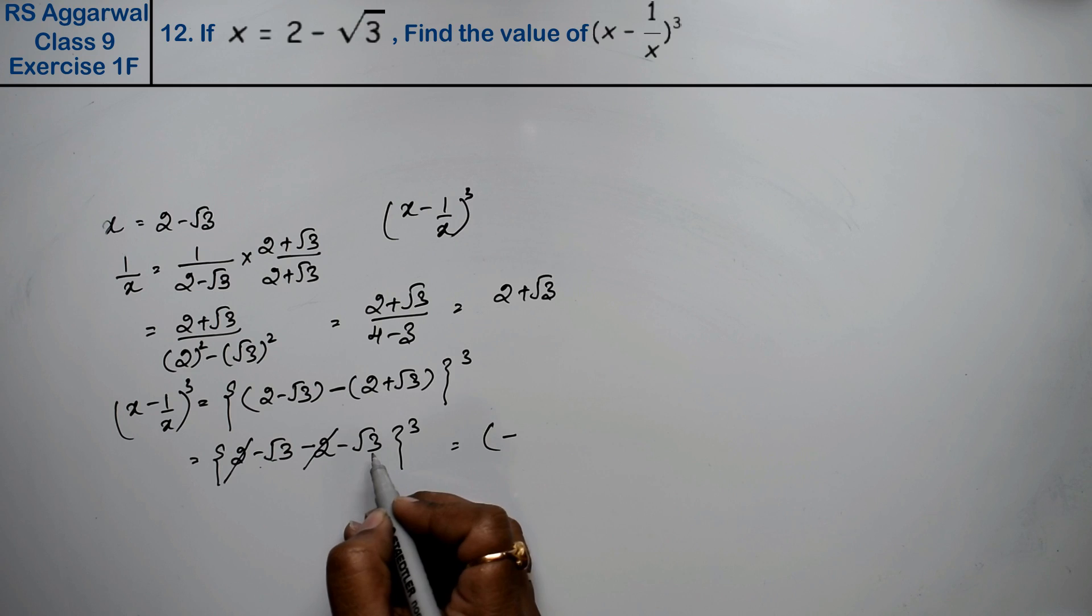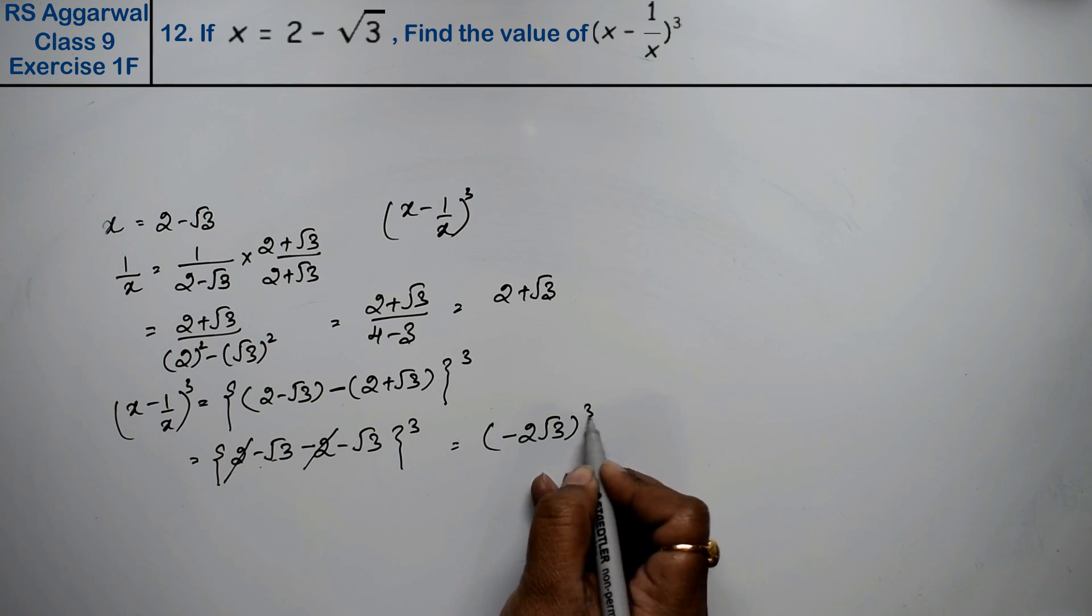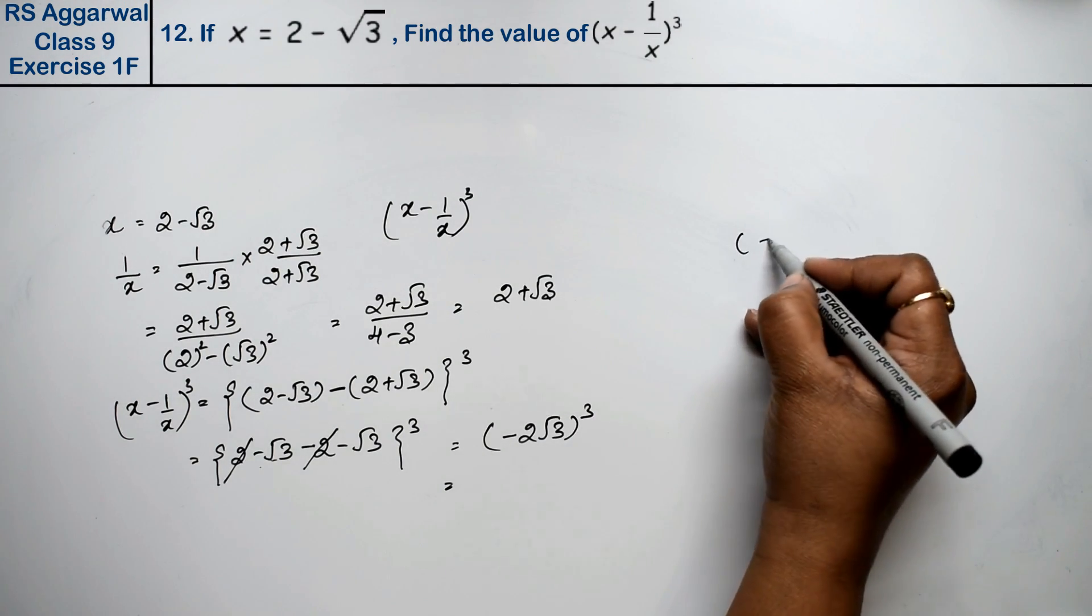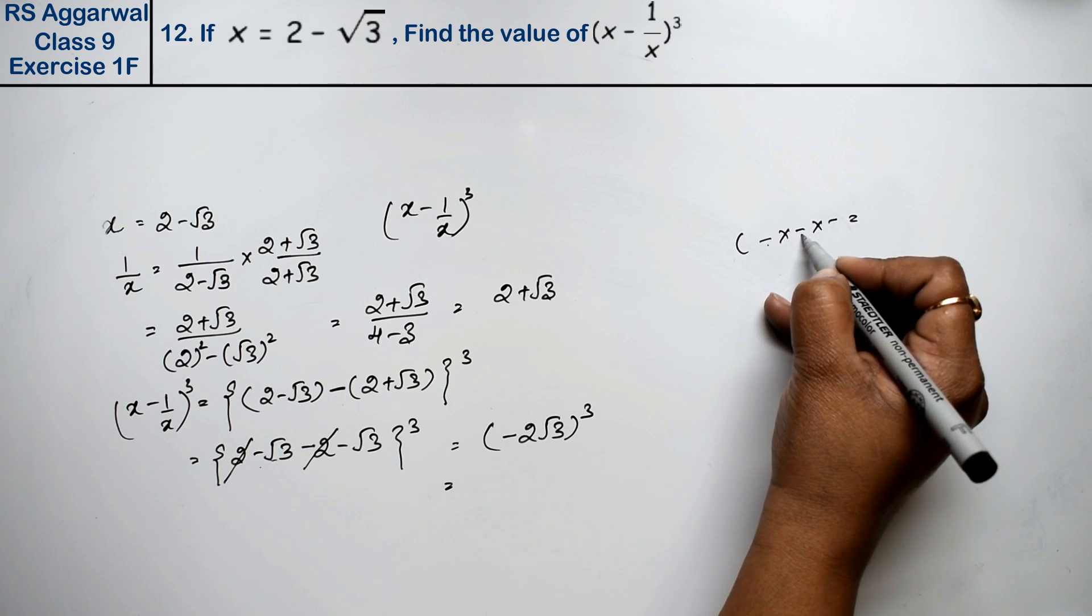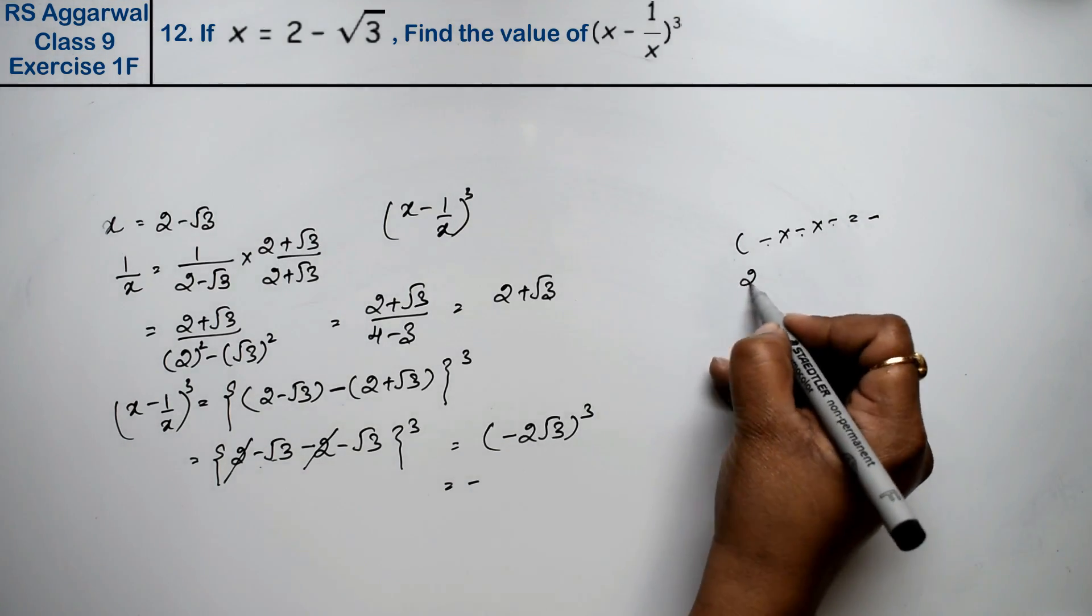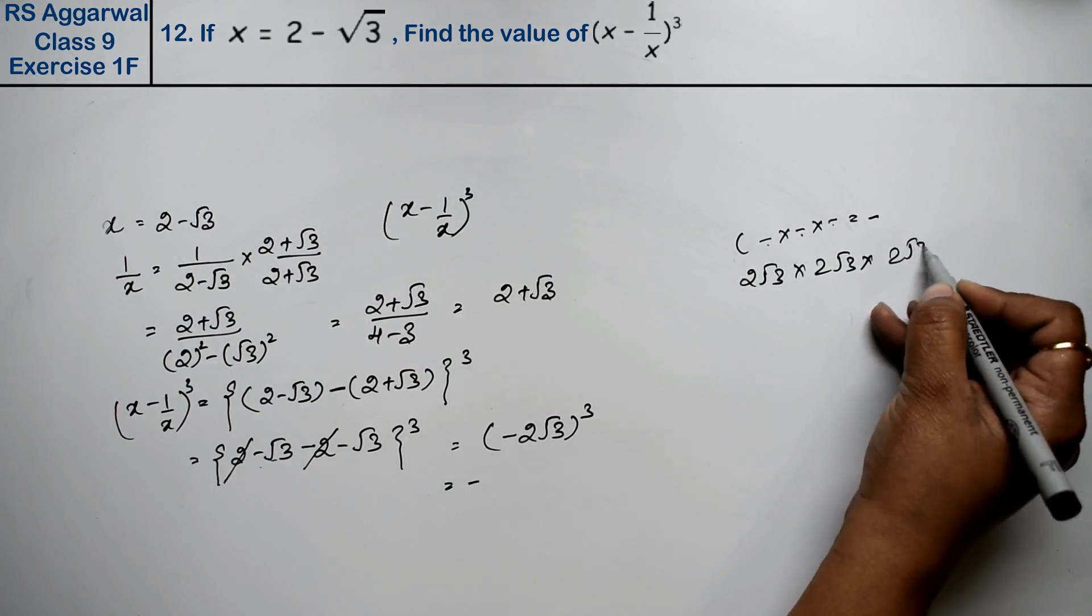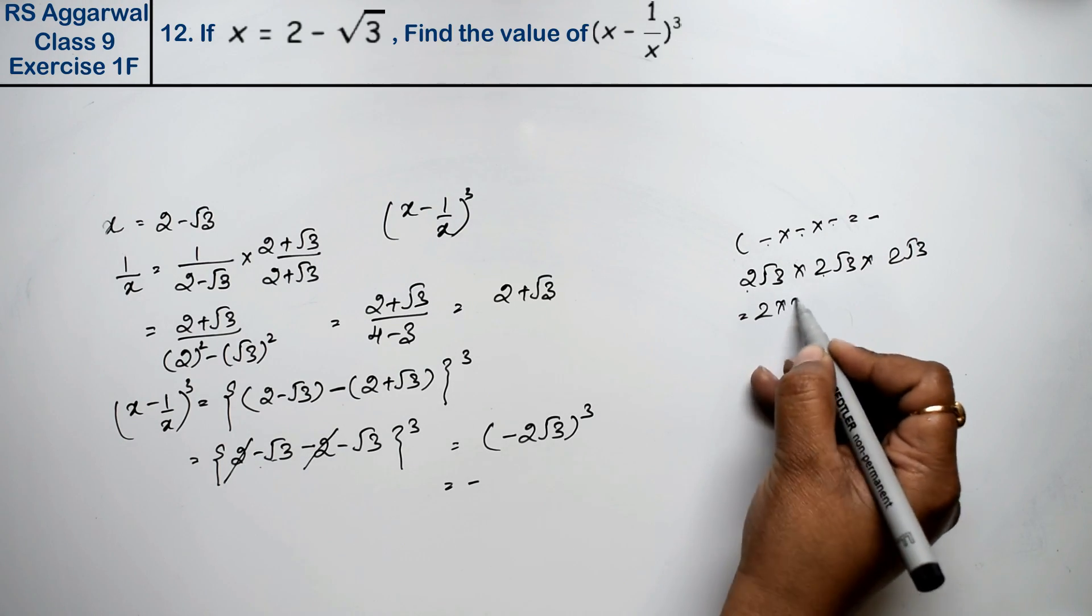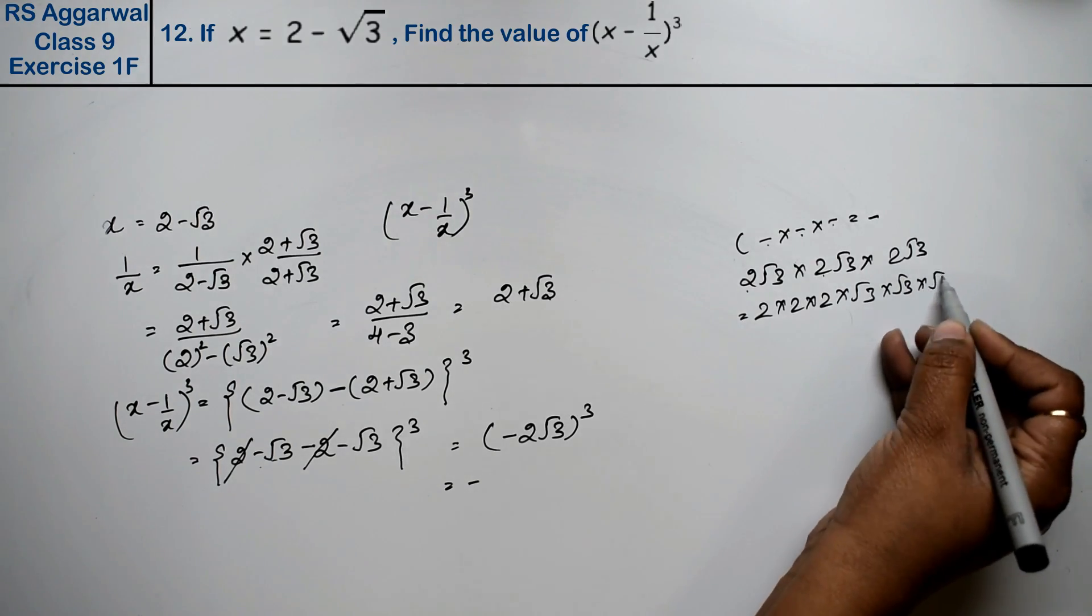This gives minus 2 root 3. Now we calculate: minus 2 root 3 times minus 2 root 3 times minus 2 root 3. Now see, two 2's are 4, then multiply.